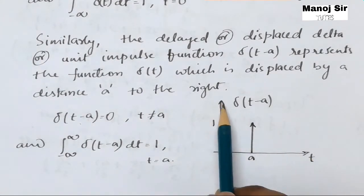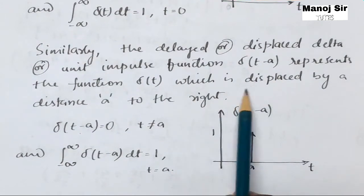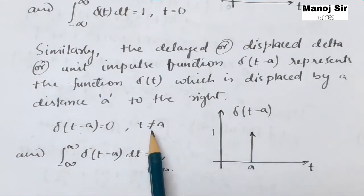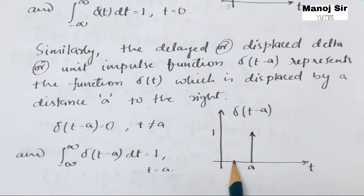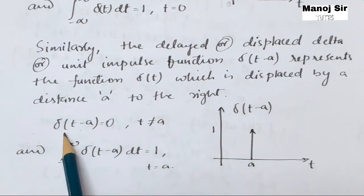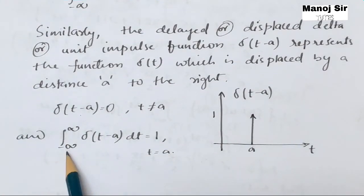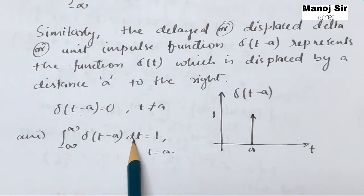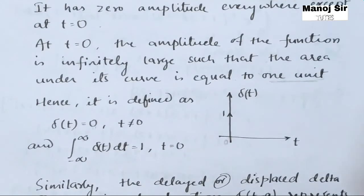In the graph, the x-axis is t and the y-axis is delta(t minus a). Since it is displaced by a distance a, at t equal to a the amplitude is infinitely large, but for all other values of t the amplitude is zero. So delta(t minus a) equals zero when t is not equal to a, and the integral from minus infinity to plus infinity of delta(t minus a) dt equals one when t equals a.